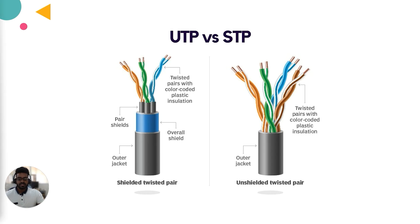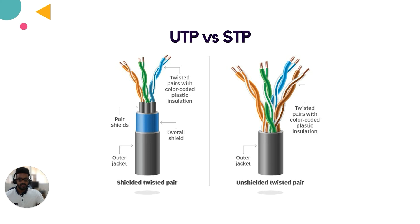UTP stands for unshielded twisted pair. The internal wires are encased in only a plastic sheet. UTP cabling is cheap but does not protect against external EMI at all. STP cabling has additional shielding around the wire bundle to protect against EMI. Some STP cabling encases each wire pair in foil shielding to further protect against EMI. STP cabling is much more expensive than UTP but is necessary in some situations.